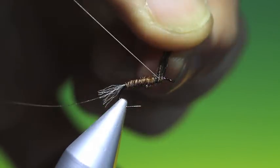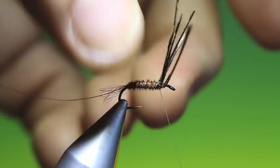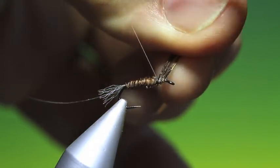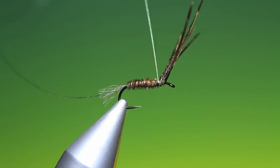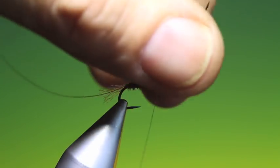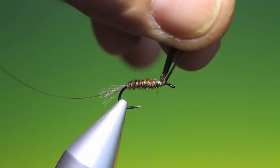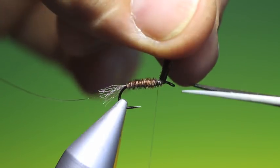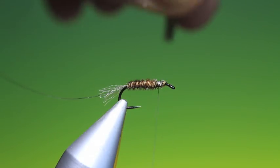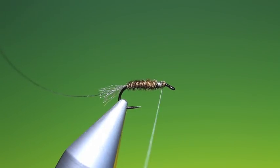Now just wind back, catch those in like so. Trim off the surplus and just tie that down.